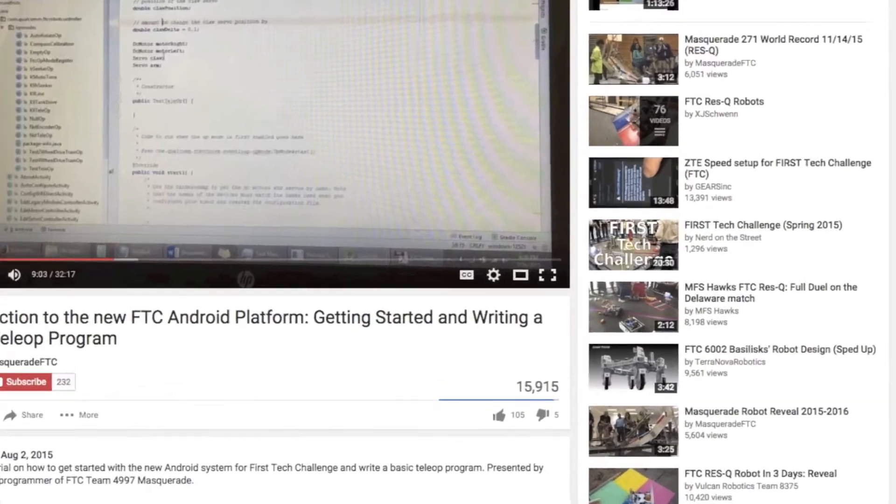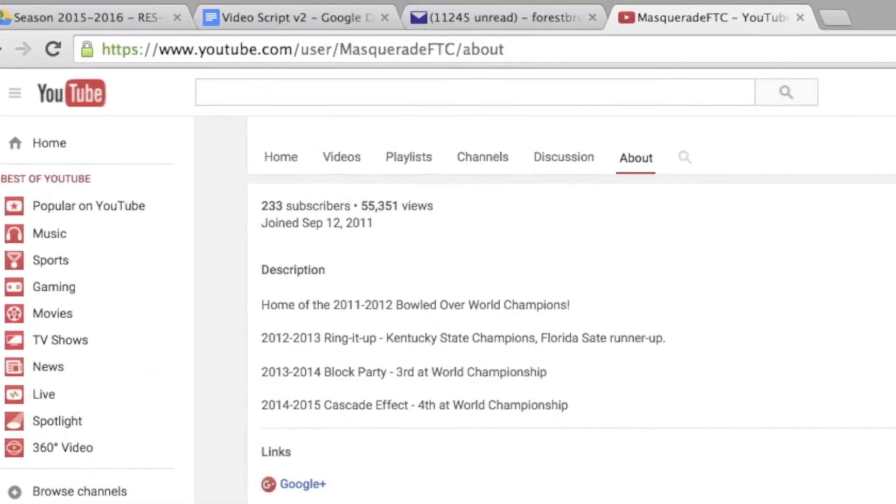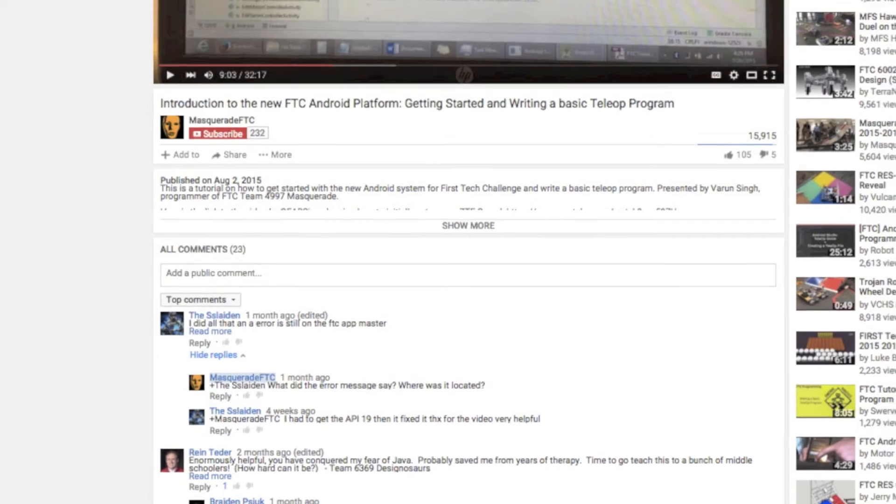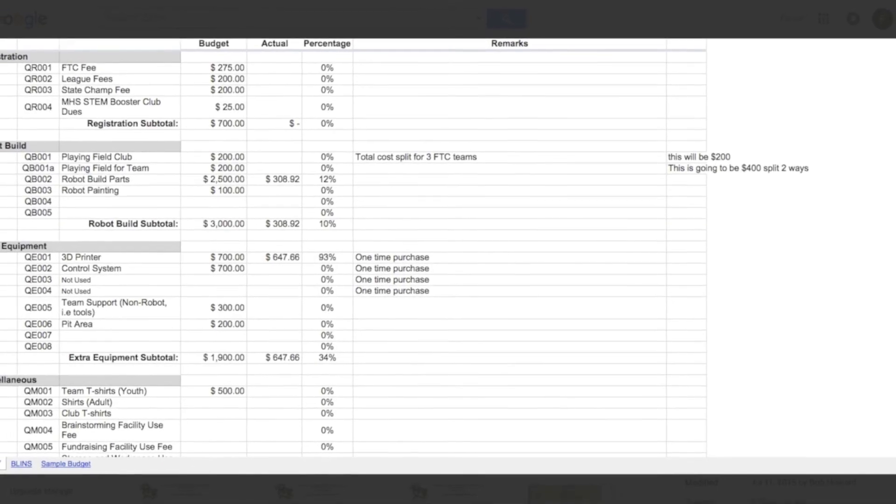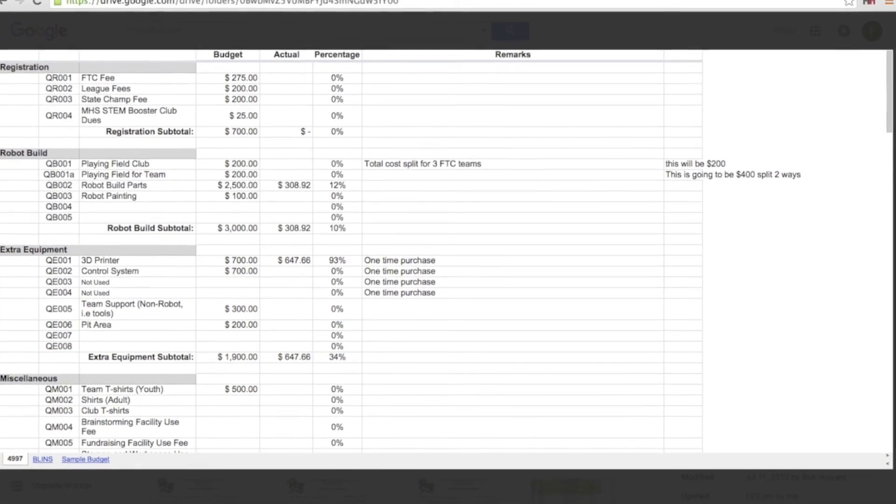Our intro video to the new control system has over 15,000 views alone, and our channel has over 47,000 views. We have answered hundreds of comments and emails about our robot and the new technology system. We have helped multiple teams with programming and troubleshooting. We keep track of our revenues and expenditures in a spreadsheet to make sure we are always within the budget.